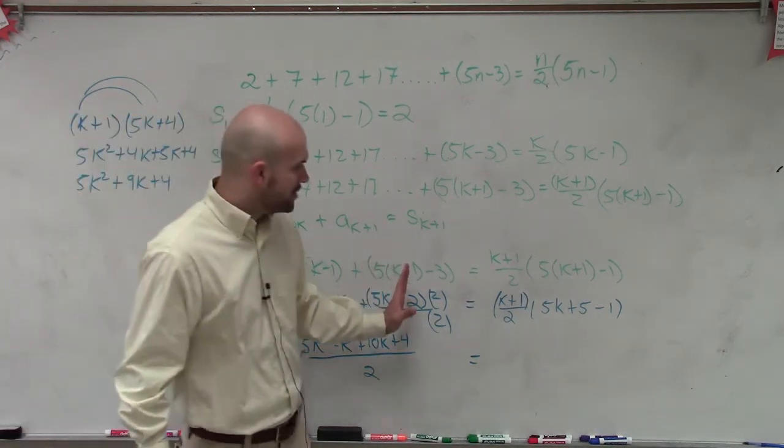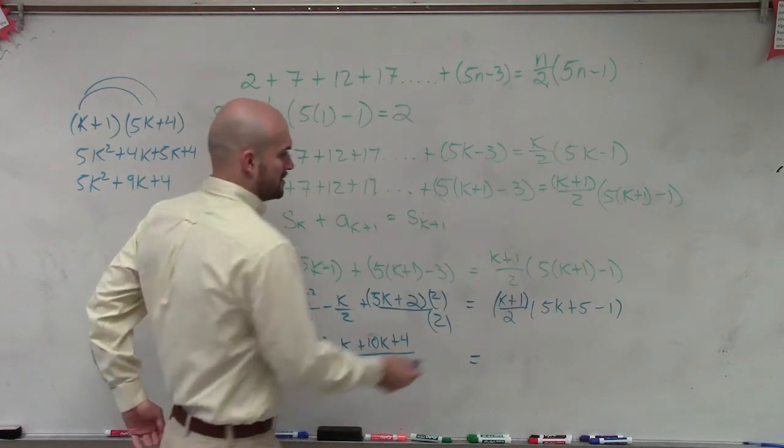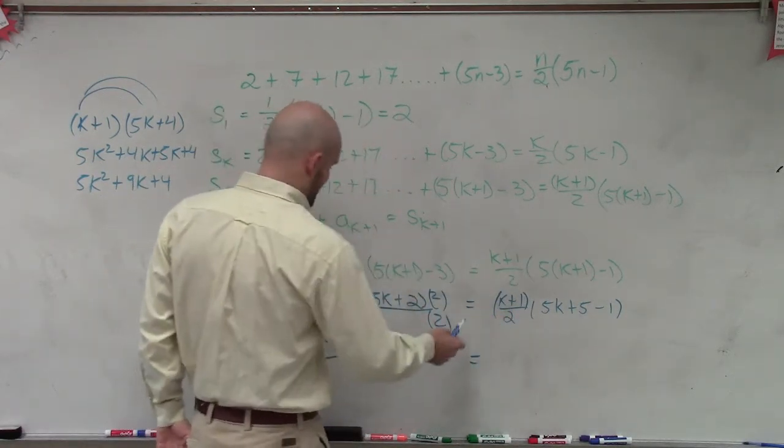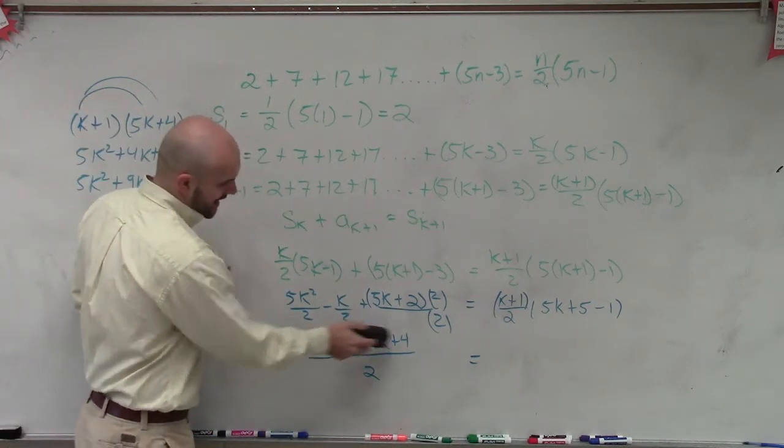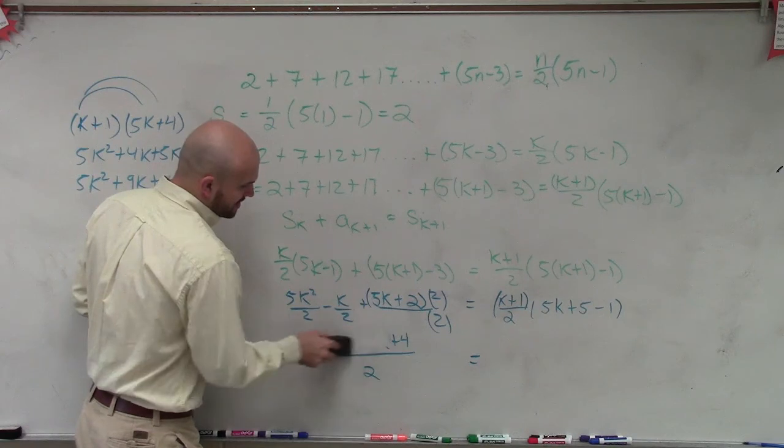So now when I multiply that all the way across, what I end up getting is, and this we can rewrite, so we can rewrite the negative k and 10k. Let's just write that as plus 9k.